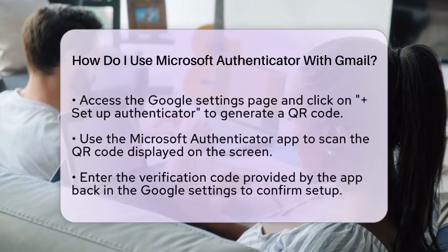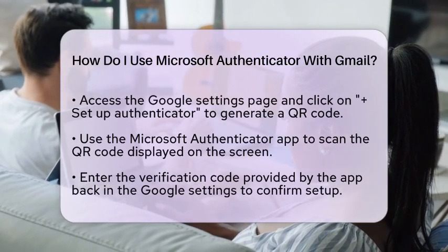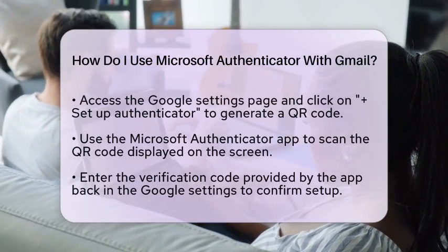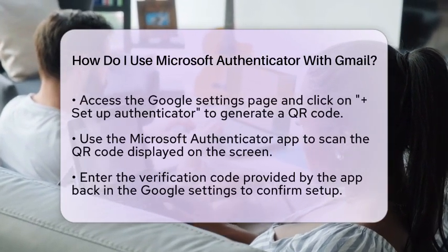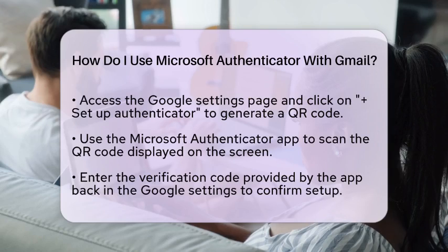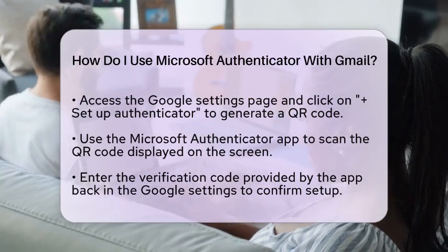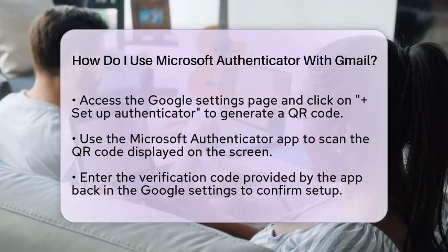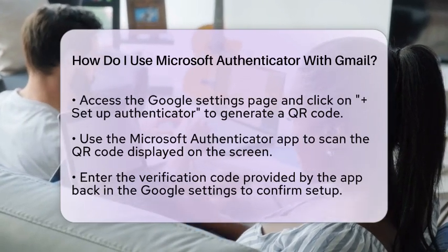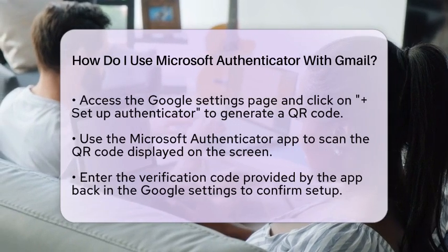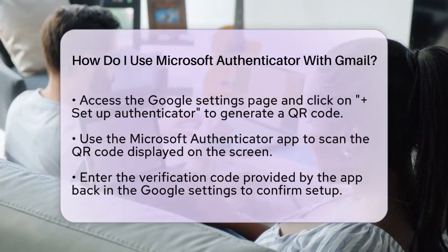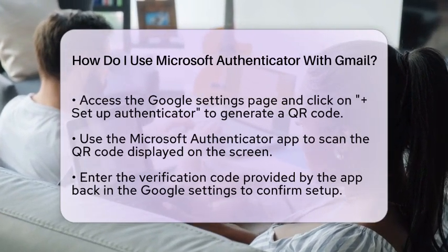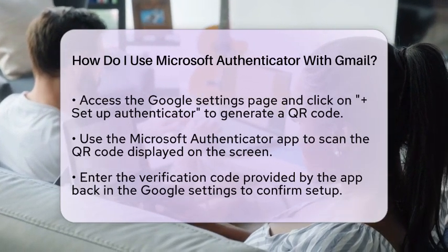Once you have scanned the QR code, the app will display a verification code. Enter this code back in the Google settings to confirm the setup. After verifying the code, you should see a confirmation message indicating that your Gmail account is now secured with Microsoft Authenticator.